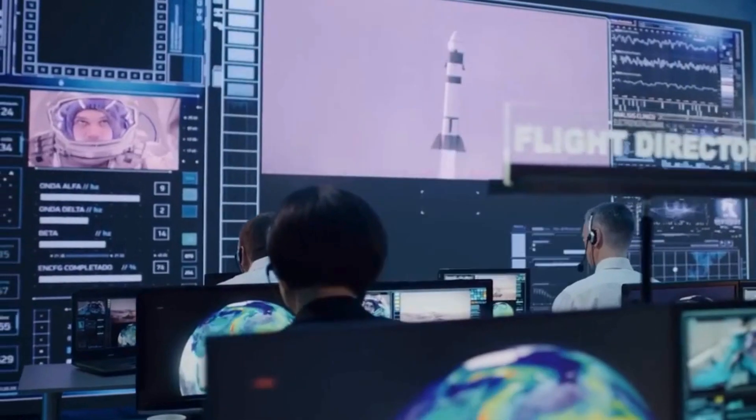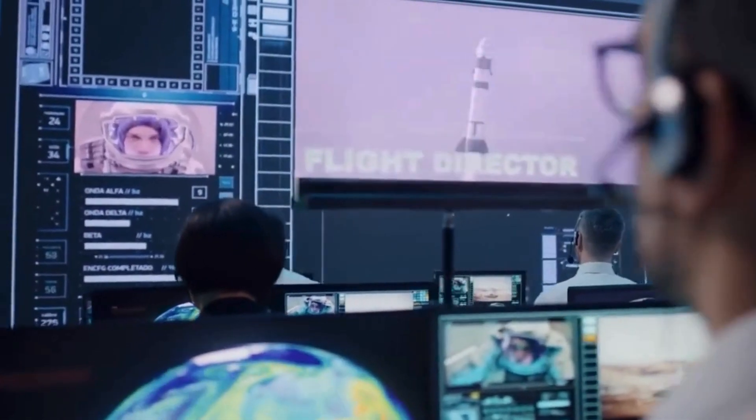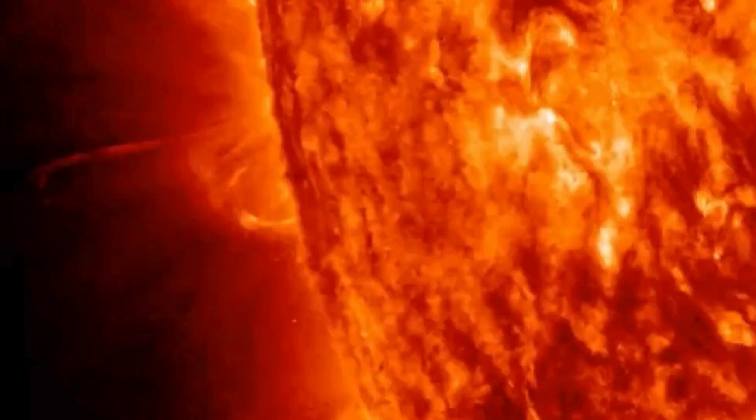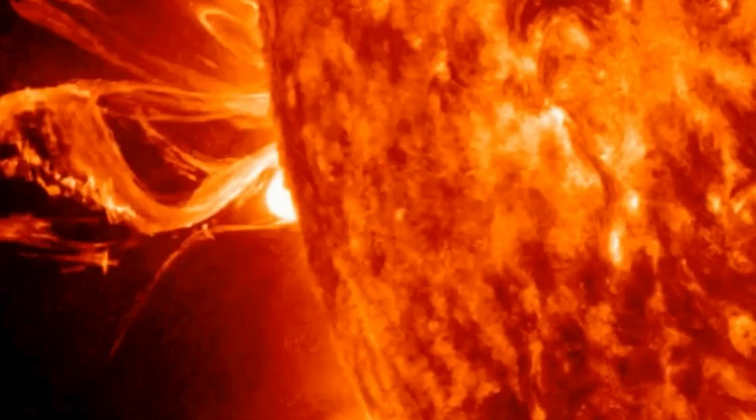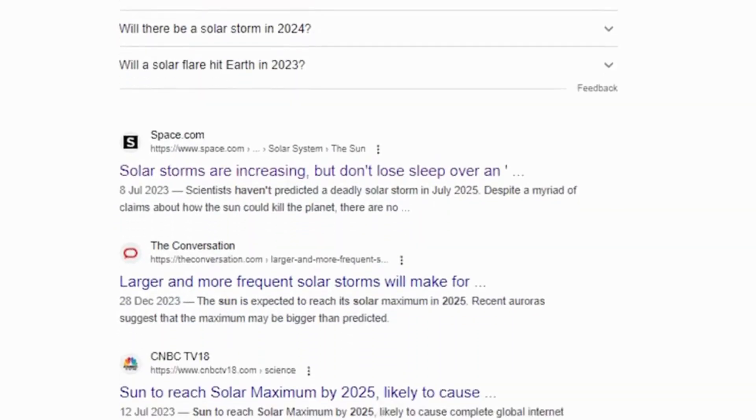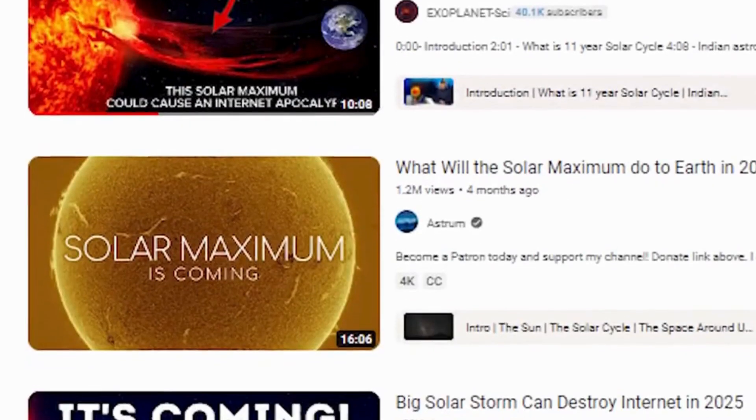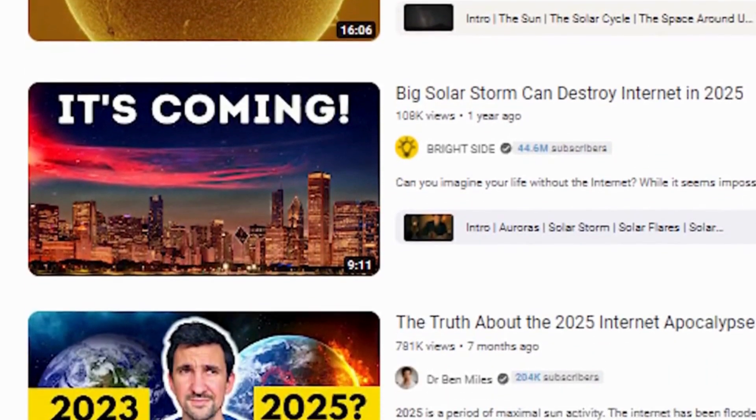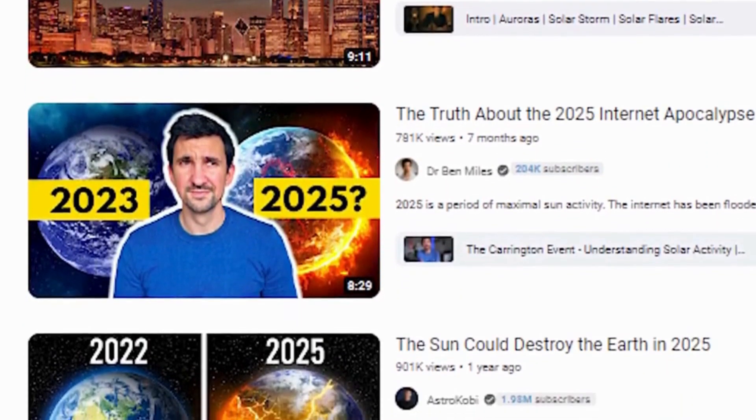However, scientists who monitor solar activity have recently discovered that solar activity has peaked, and one of the largest solar storms is expected to move towards earth. On the internet, especially on YouTube, numerous videos have been made about the prediction of a large solar storm in 2025.